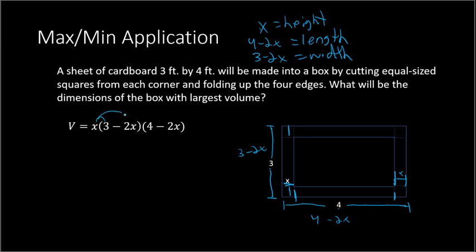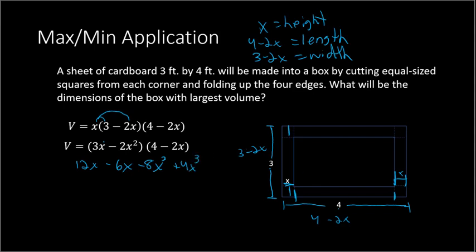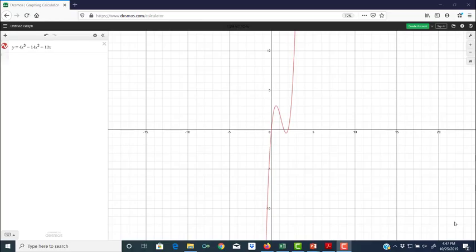We can use our volume formula for a rectangular prism: volume equals length times width times height — so x times (4 minus 2x) times (3 minus 2x). Distributing x gives 3x minus 2x squared. Then FOILing, we get 12x minus 6x squared minus 8x squared plus 4x cubed. Combining like terms: volume equals 4x cubed minus 14x squared plus 12x. So we have found our volume function.